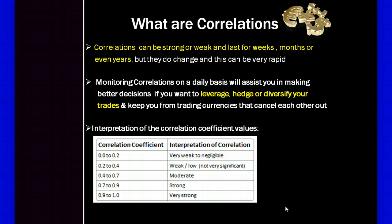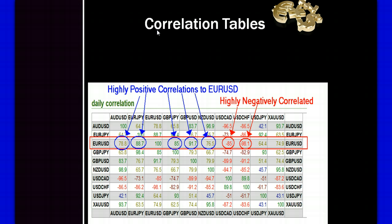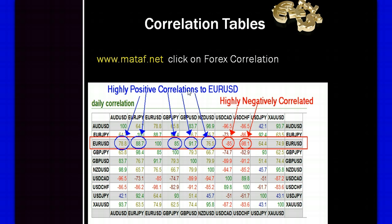Understanding correlations will assist you in making better decisions — whether you want to leverage, hedge, or diversify your trades — and keep you from trading currencies that cancel each other out. The interpretation of correlation coefficients, converted to percentages: 0–20% is very weak, 40–70% is moderate, 70–90% is strong, and 90–100% is very strong.